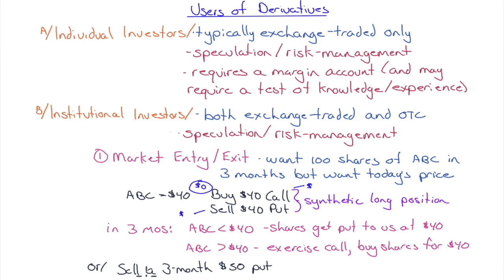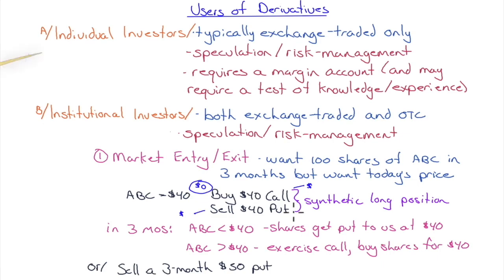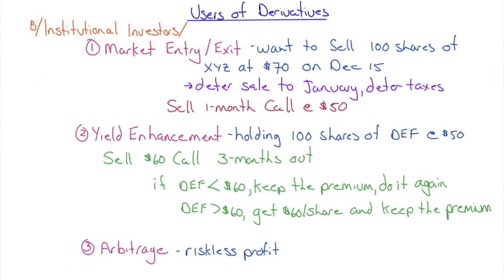Another entry strategy: sell a 3-month $50 put when the stock is at $40. Since the stock is $10 below the put strike, the put is worth at least $10. You collect $10 in premium — so in the future, if the stock gets put to you, your effective cost is $50 − $10 = $40. You receive the premium upfront, reducing your capital requirement. Similarly, options can be used for exit strategies, such as when you want to sell 100 shares of XYZ at $70 on December 15th to realize a $30 per share capital gain.